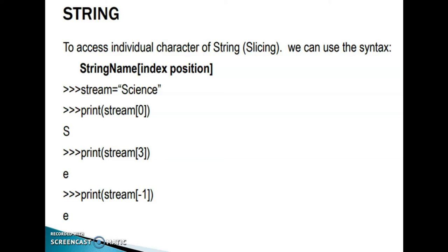To access an individual character of a string, we use slicing with the syntax: string_name[index_position]. For example, if stream = 'Signs', then stream[0] gives 'S' (0th index), stream[3] gives 'e' (3rd index: 0,1,2,3), and stream[-1] gives 'e' using backward indexing, where -1 is the last character.